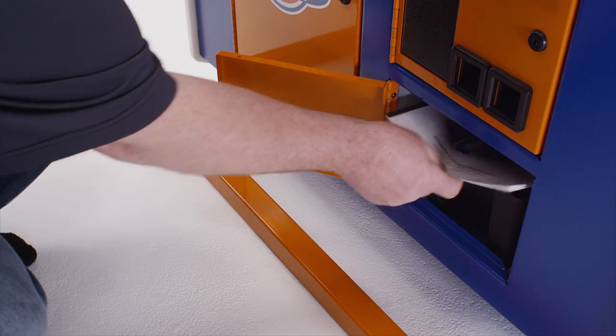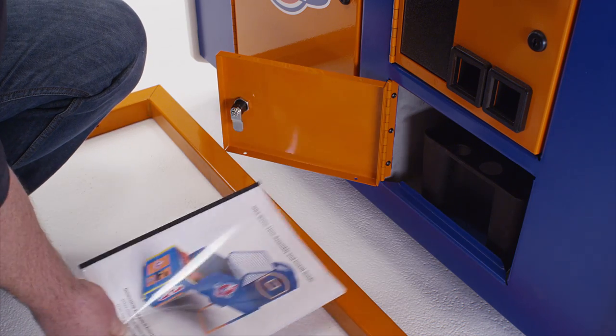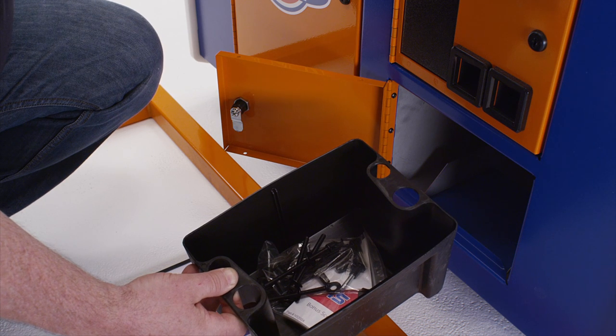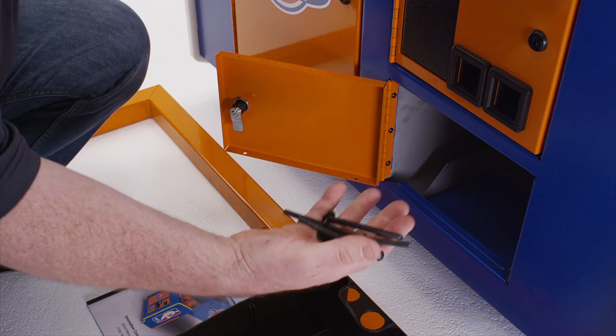Using the provided 45 key, unlock the cash box. In the cash box, you will find the assembly and install manual laying on top of the cash box. Take the cash box out.